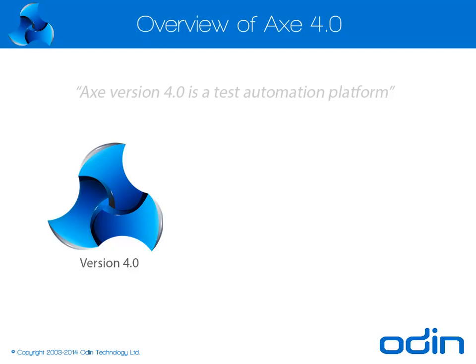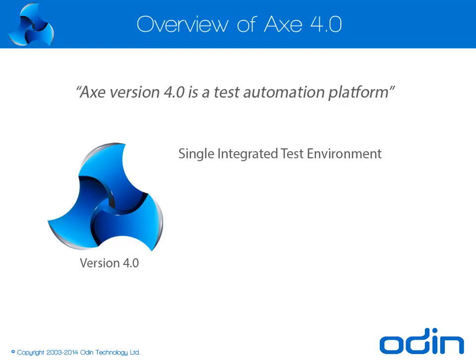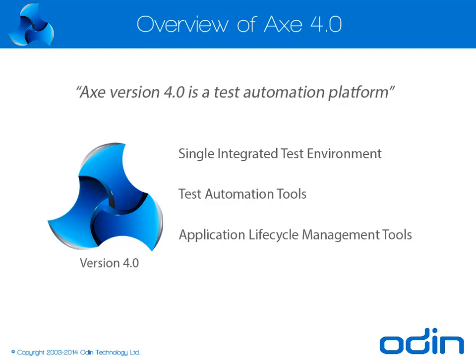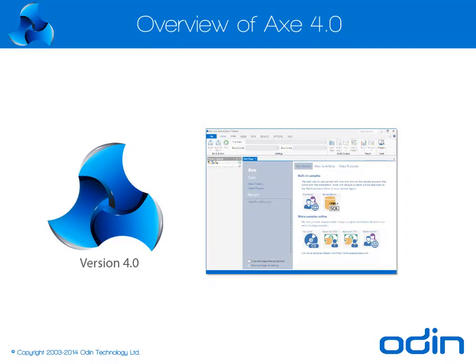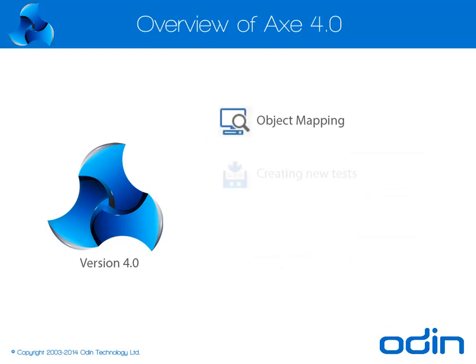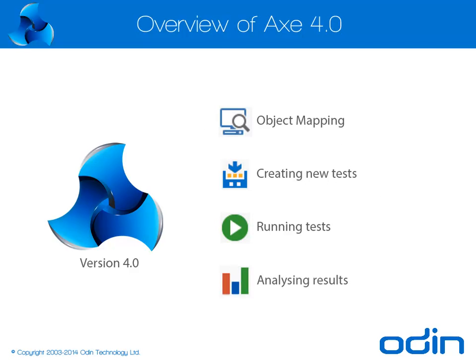AXe version 4 is a test automation platform that enables test automation projects to be managed in a single integrated test environment, in conjunction with a range of test automation and application lifecycle management tools. Within AXe's single integrated test environment, the four key stages of a test automation project can be managed: mapping objects, creating new tests, running tests, and analysing results.